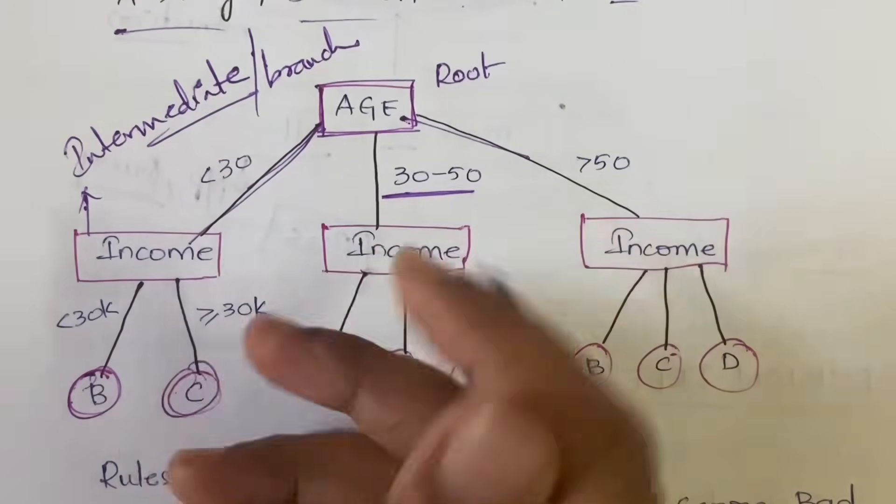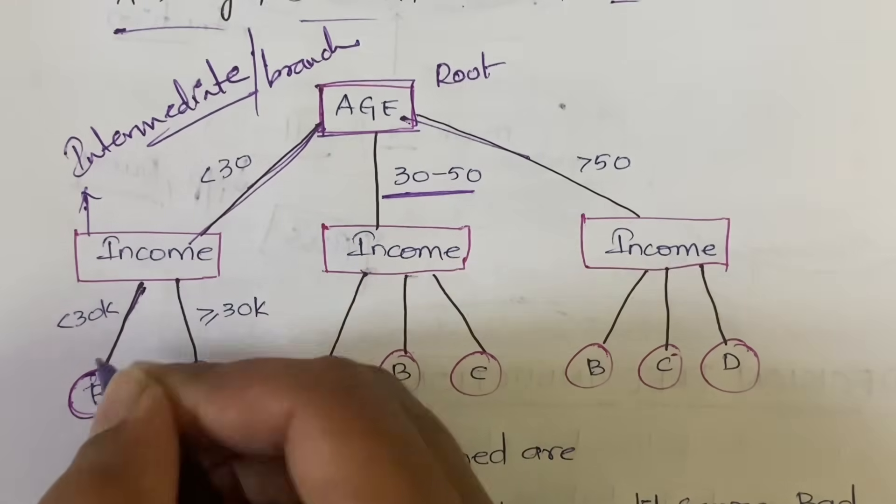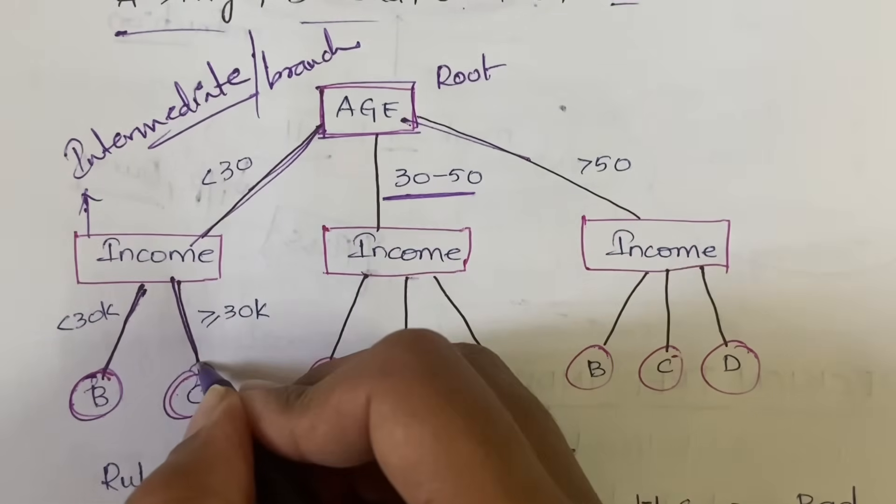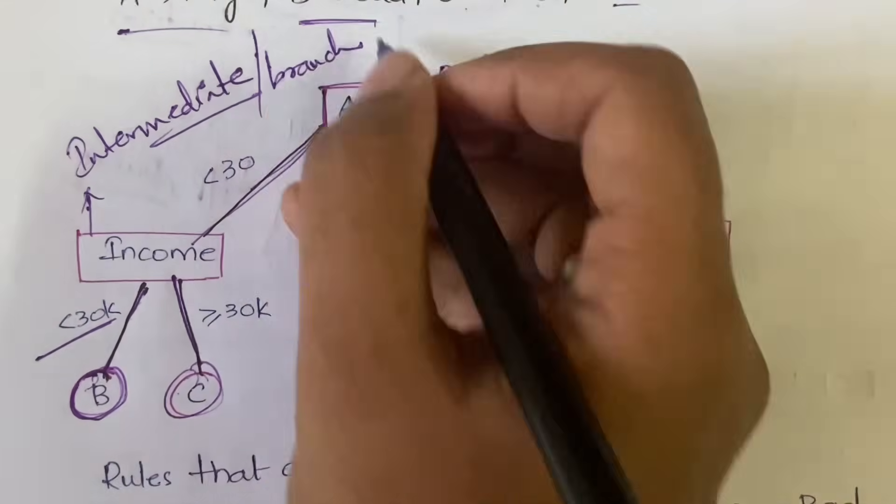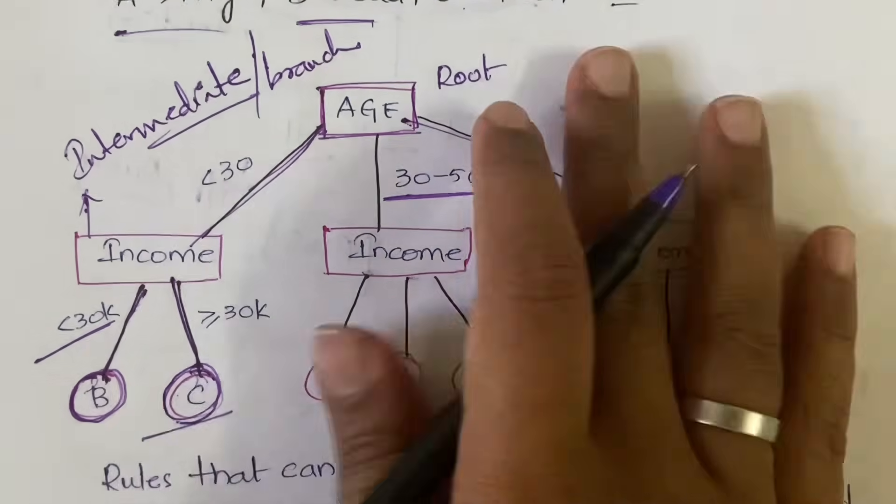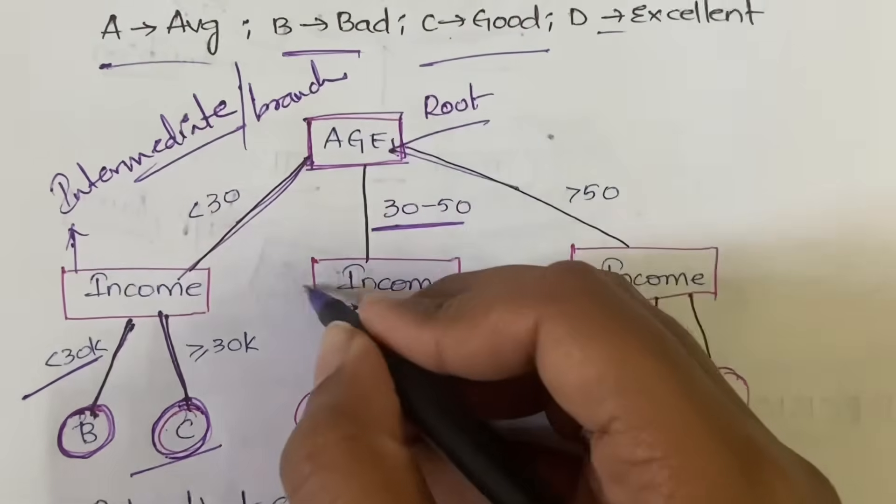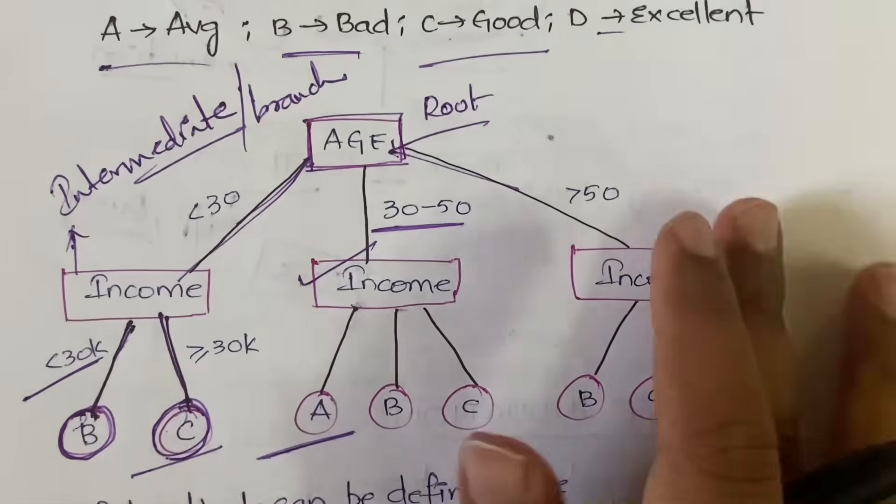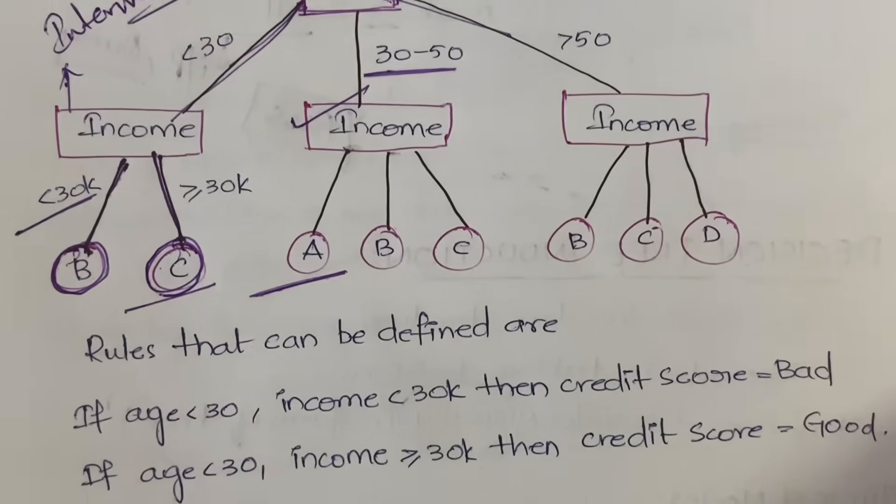If the age is less than 30 then you will have two categories again: whether the income is less than 30,000 or income is greater than or equal to 30,000. If the income is less than 30,000 then the credit score is B, that is bad. And if the income is greater than or equal to 30,000 then the credit score is C which is good. So based on the age and based on the income you are getting the credit score of a particular person.